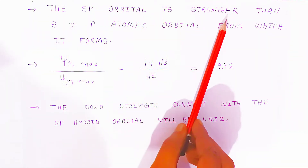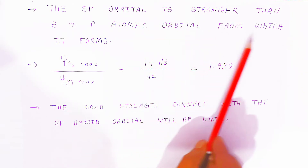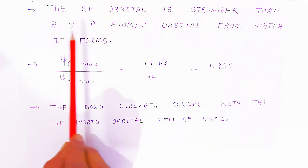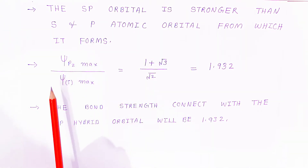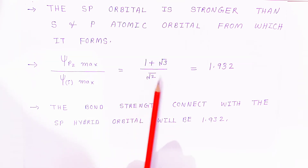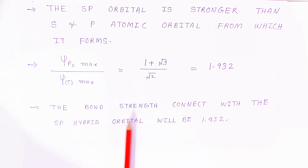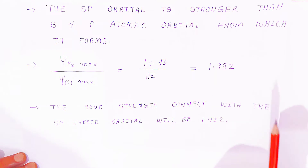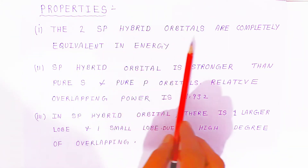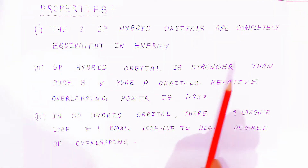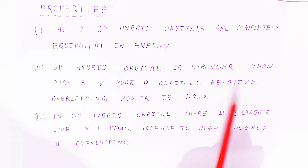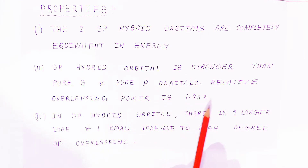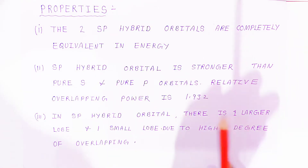The SP hybrid orbital is stronger than the pure S and P atomic orbitals from which it forms. Taking the ratio ψPZ maximum / ψPZ max gives 1/√3 over √2, so the relative bond strength of the SP hybrid orbitals is 1.932. The two SP hybrid orbitals are completely equivalent in energy. There is one larger lobe and one smaller lobe due to the high degree of overlapping.